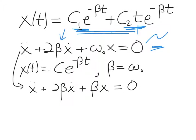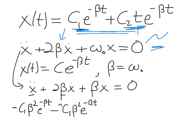Taking two time derivatives gives c₁β²e^(−βt). The middle term 2βẋ gives −2c₁β²e^(−βt), since one time derivative of e^(−βt) brings down −β. The last term, using ω₀² = β², gives c₁β²e^(−βt). Adding all three terms together gives exactly zero, confirming the first solution satisfies the differential equation.